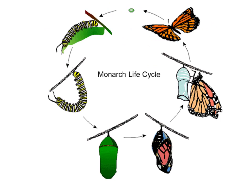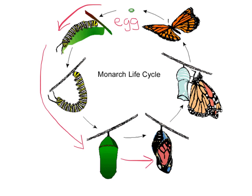Now let's review the life cycle of the monarch butterfly. First, we start with the egg. The egg hatches into a caterpillar. The caterpillar grows and sheds its skin until it is ready to form its chrysalis. The caterpillar transforms inside of its chrysalis. When the chrysalis becomes clear, the adult butterfly is ready to hatch. The adult butterfly stays on a leaf until its wings dry and it is able to fly.